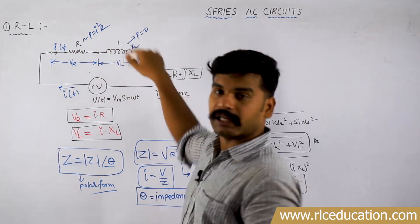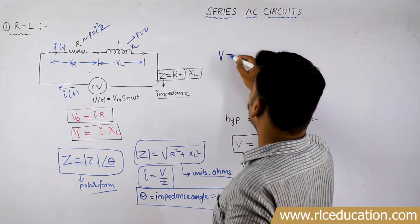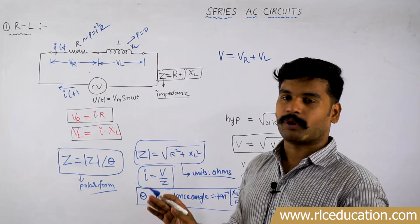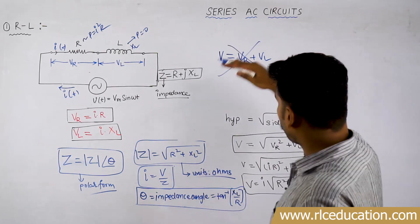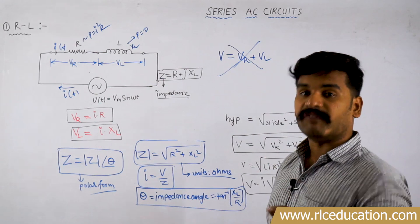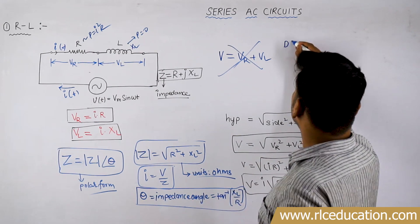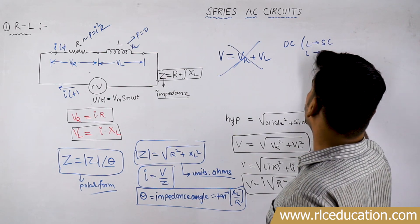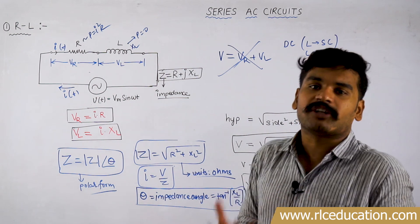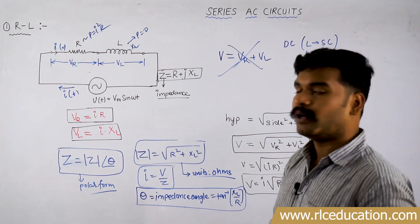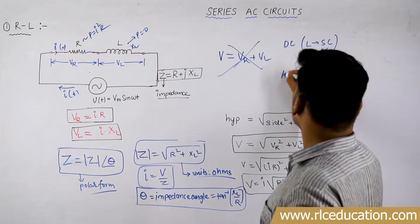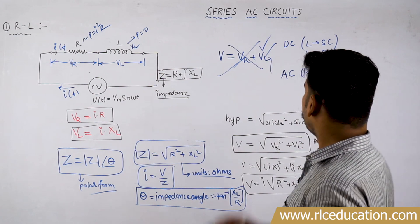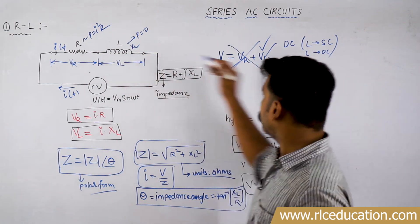If I try to apply KVL in this loop, then total voltage equals VR plus VL — do you think this is correct? No, absolutely wrong. This kind of equation is valid only in a DC circuit. In DC, if you place an inductor it is a short circuit, and a capacitor is an open circuit, so there is no effect of placing them. This relation is only valid in an AC circuit composed entirely of R. If it includes R and L, this equation is invalid.